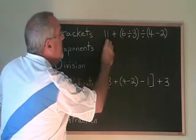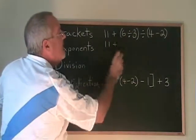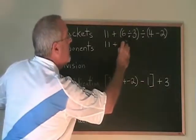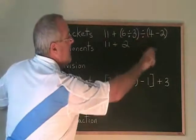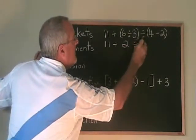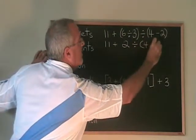This is the one we get to first. So we are copying down 11 plus. 6 divided by 3 is 2. We write the 2 in the space of the bracket. Then we copy down the rest, divided by another bracket, 4 minus 2.